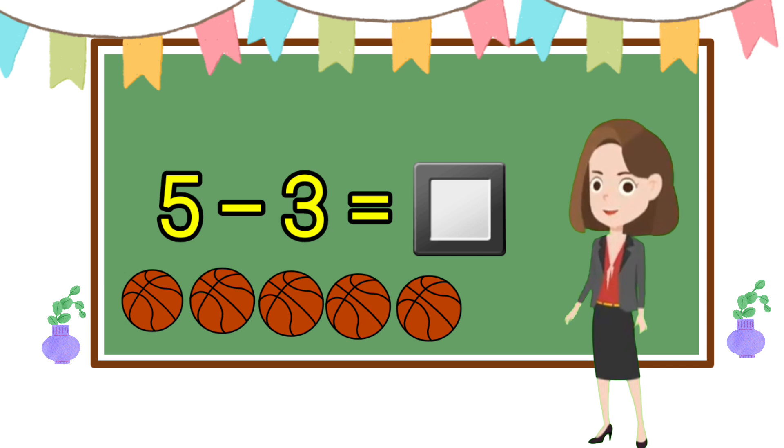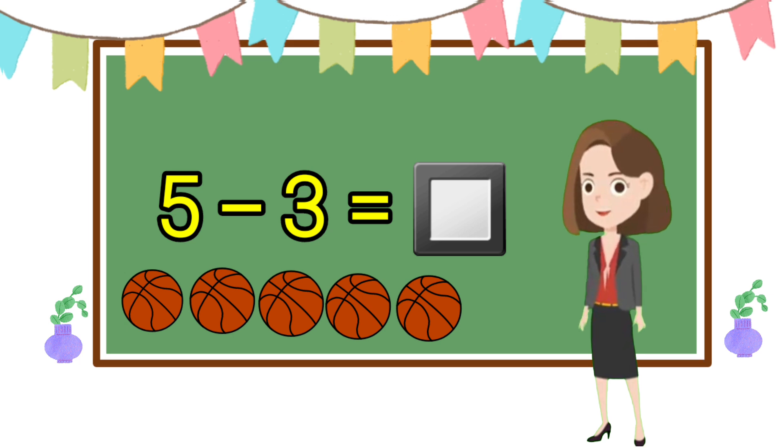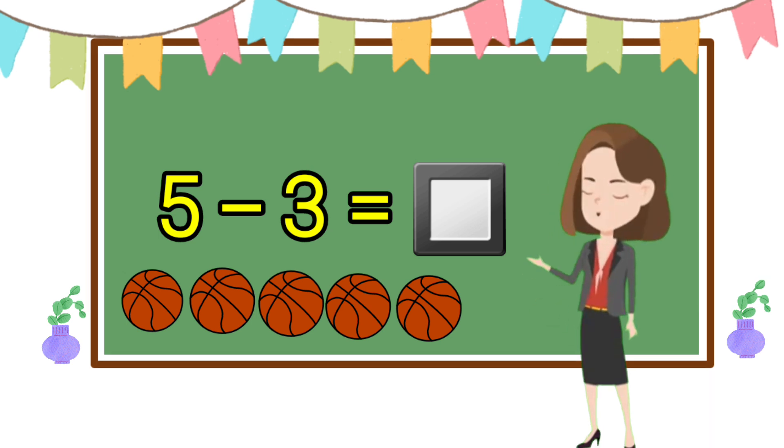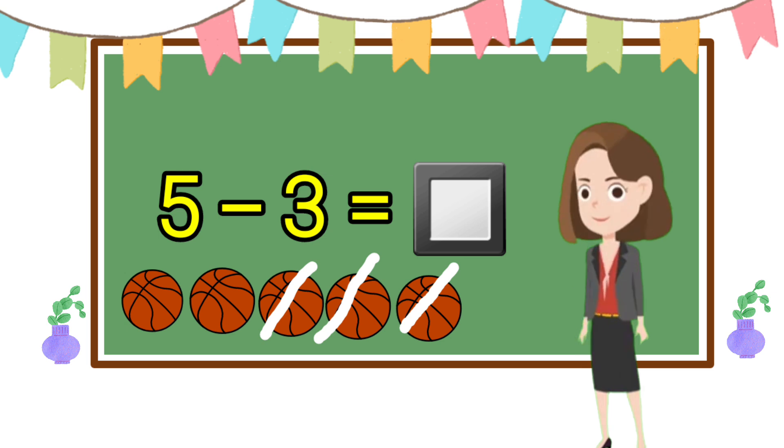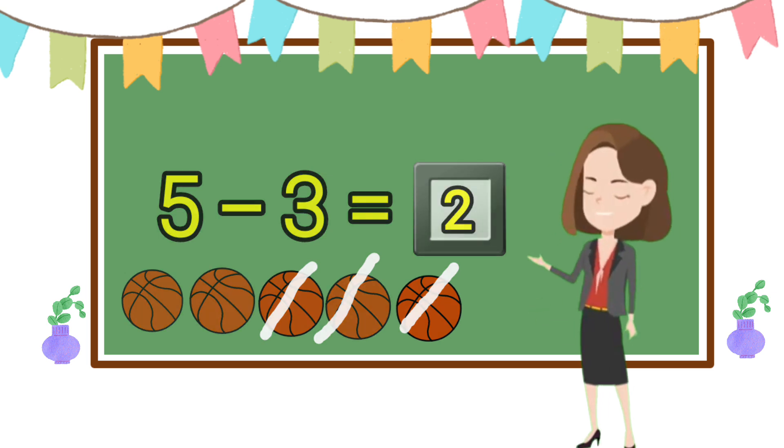Now count how many balls are there. One, two, three, four, five. We have to take away three balls from it. How many balls will remain? Two. Two balls will remain, correct. Now next.